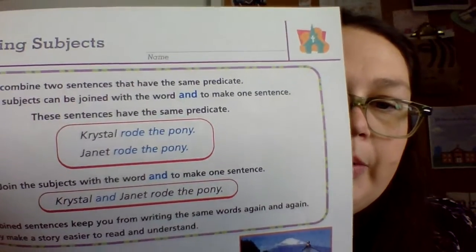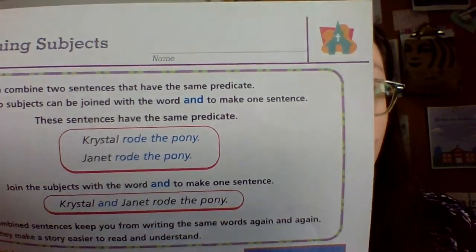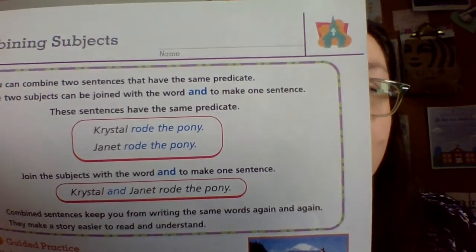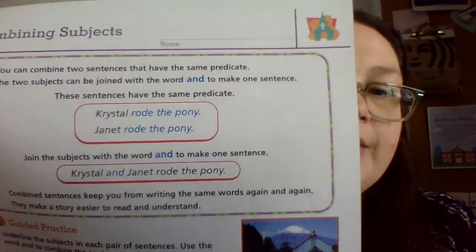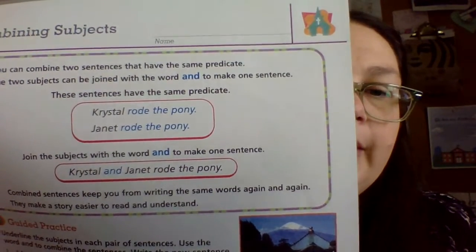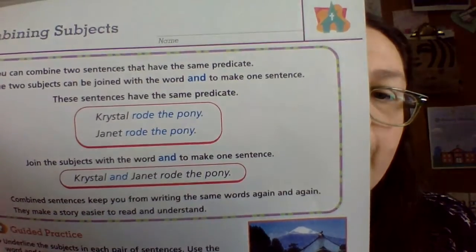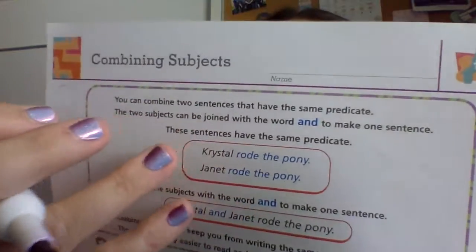Today we're going to talk about combining the subject. The subject is the first part of the sentence — the person, the place, or the thing. So if you had, on your paper, 'Crystal rode the pony' and 'Janet rode the pony,' you can see they both have the same 'rode the pony.' So you can just say 'Crystal and Janet rode the pony.' Do you see how it put the two subjects together and then that sentence structure was there?